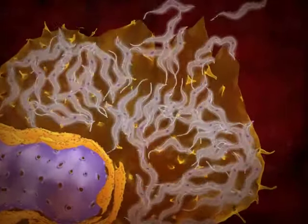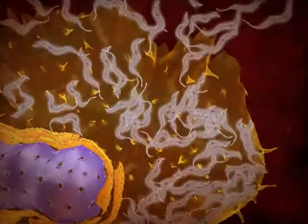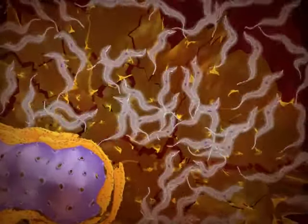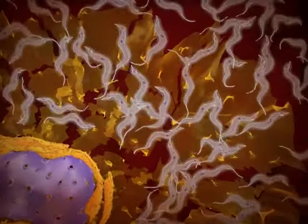The trypomastigotes reach the extracellular space and, subsequently, the bloodstream. The parasites will now infect new cells.